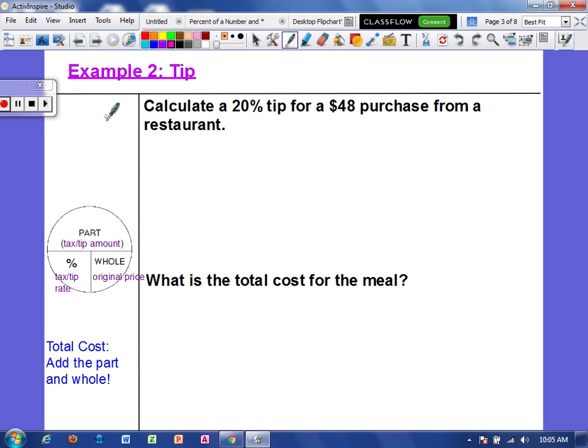Example two, we are going to focus on tip. Calculate a 20% tip for a $48 purchase from a restaurant. So we have our percent, $48, that would be the original cost for that meal. So that would be the whole. Since we want to calculate the tip amount, that means the part is missing. So we are going to take the percent times the whole, just like we did in example one. So 20%, we're going to paddle to the left twice and make that 0.20. Now 0.20 is the same thing as 0.2, so I'm going to use that.